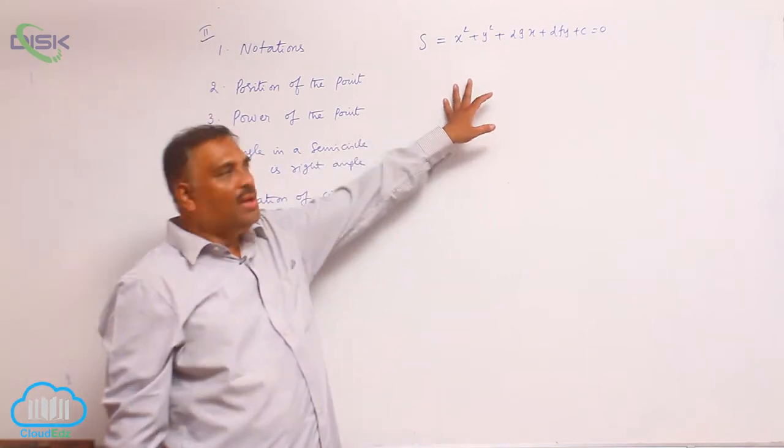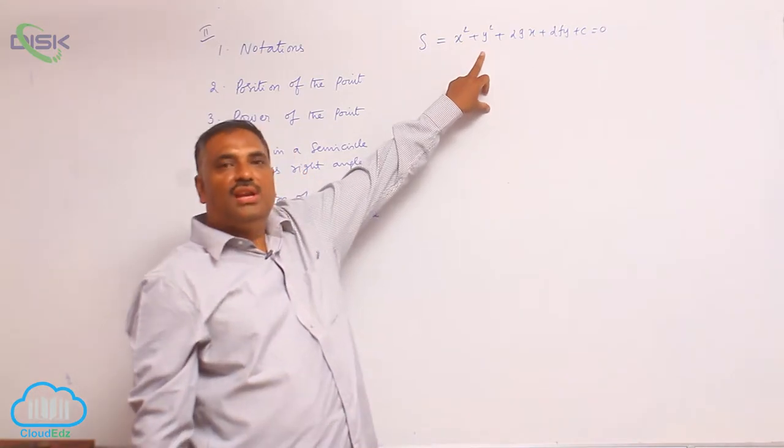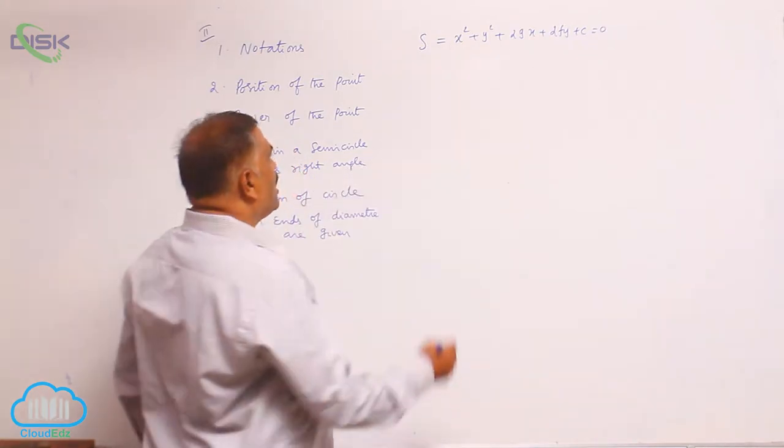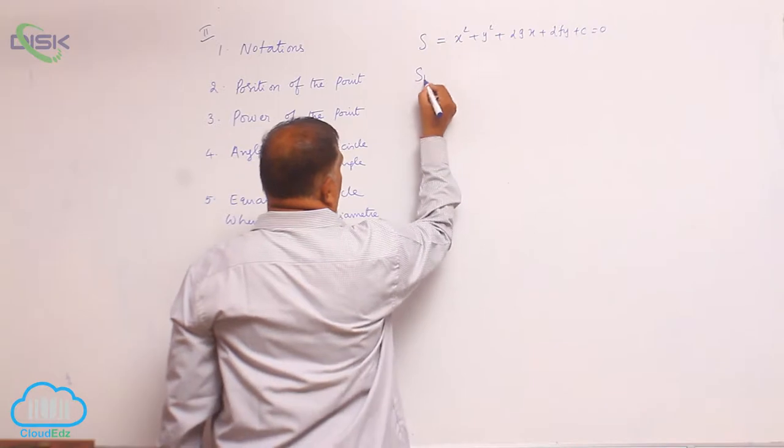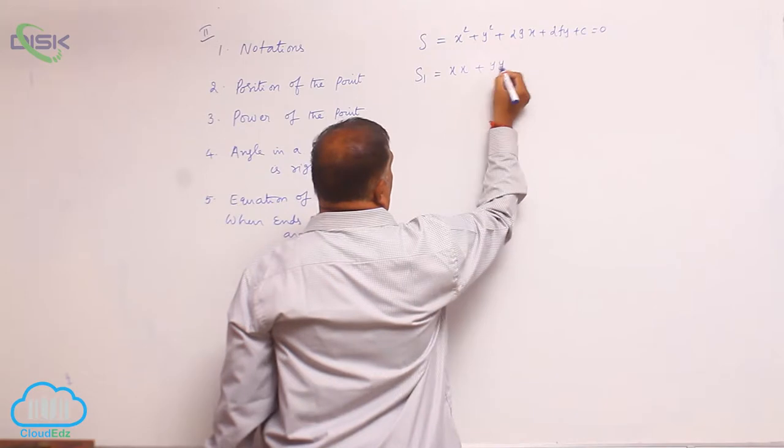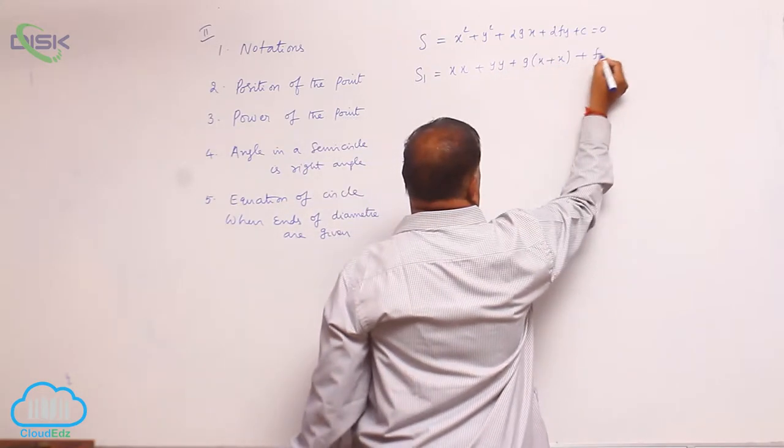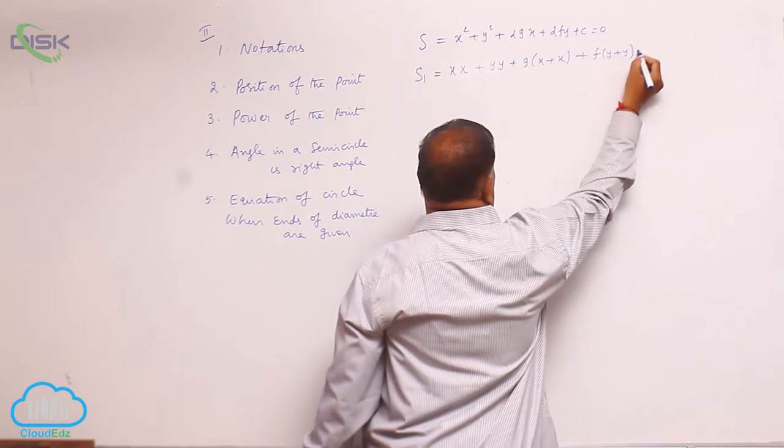Throughout this chapter, S = 0 is denoted for the general equation of circle. Now we write S₁, which means you can write it as x·x₁ + y·y₁ + g(x + x₁) + f(y + y₁) + c.